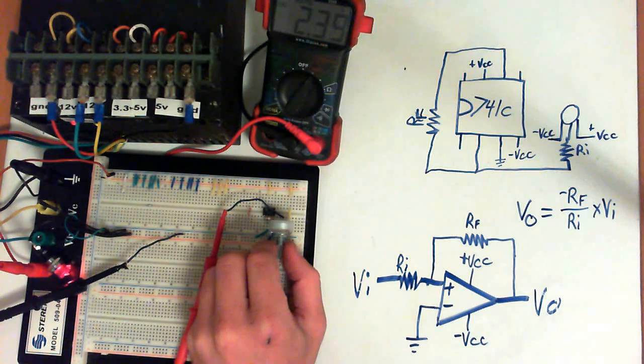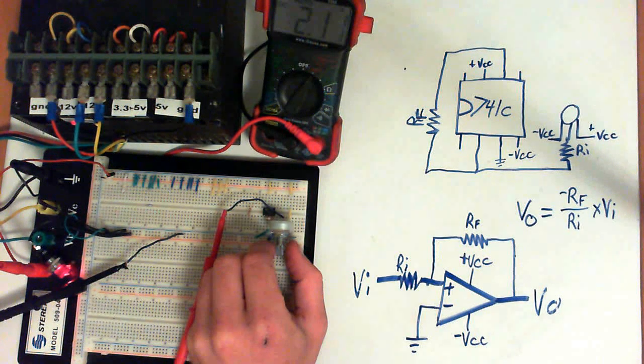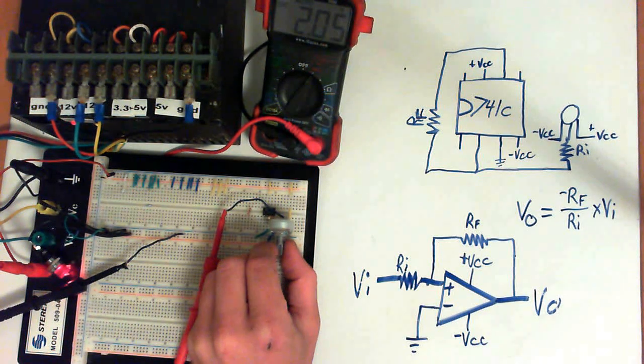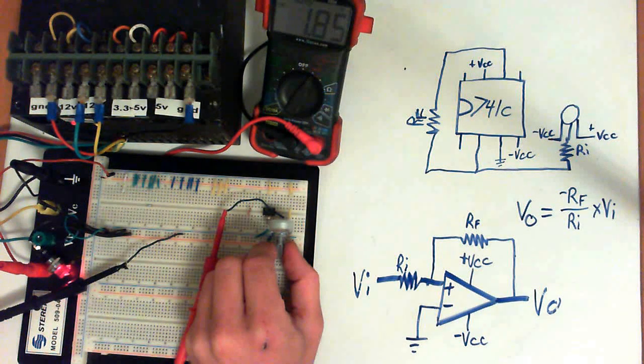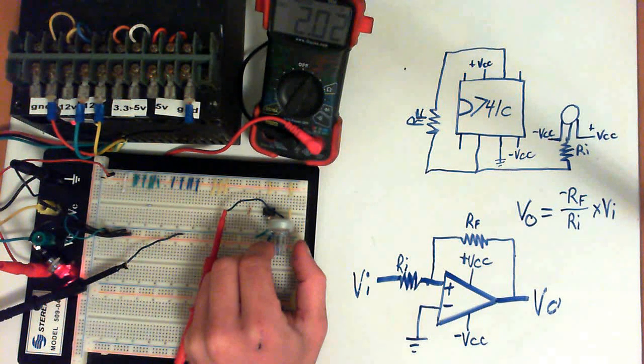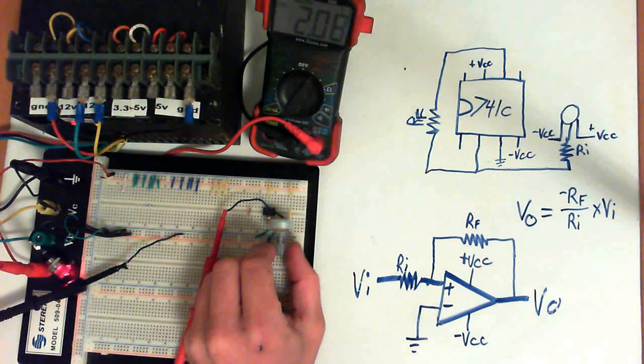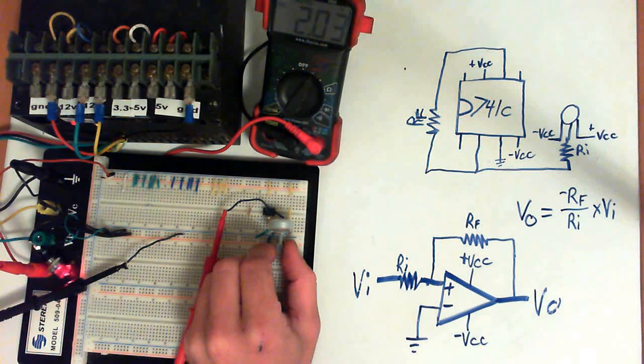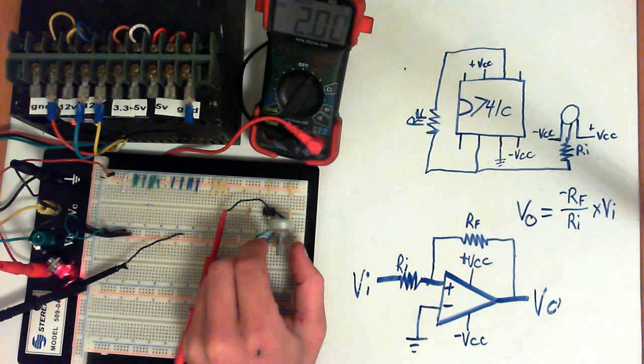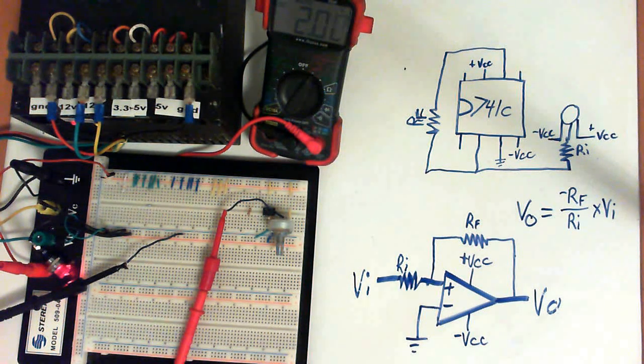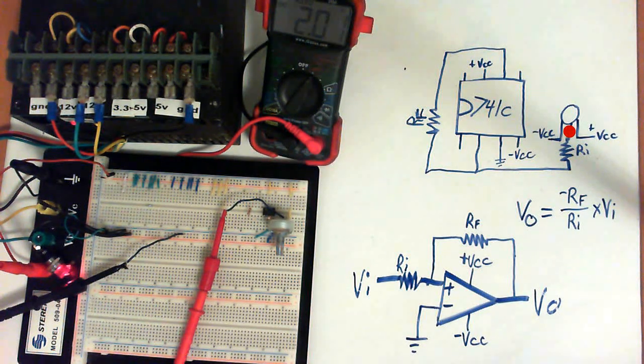Now this is the hard part because with these rough course potentiometers, they're hard to adjust. If you had a nice 15 turn precision pot, that would be a lot better. So I'm going to try to get this right on 2 volts. And there we go. So we're right on 2 volts at our input. And that again is right there, before the resistor, before RI.